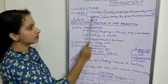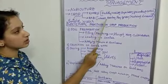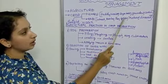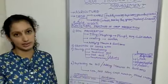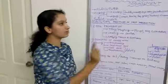Examples for rabi crops are wheat, barley, pea, gram, mustard, and linseed. These are the examples for rabi crops.